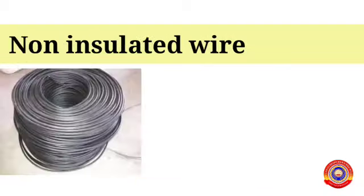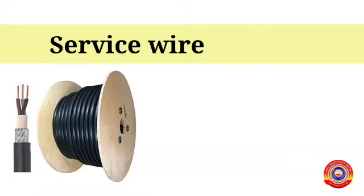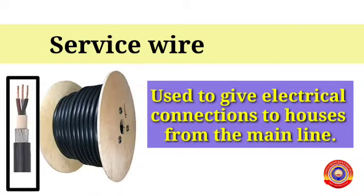Non-insulated wire: it is used to transfer electricity from one place to another. Service wire: wires of this kind are used to give electrical connections to houses from the main line. There are many layers of insulation around the metal wire inside.